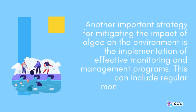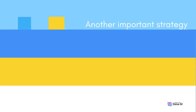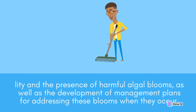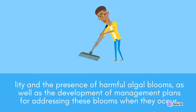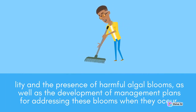Another important strategy for mitigating the impact of algae on the environment is the implementation of effective monitoring and management programs. This can include regular monitoring of water quality and the presence of harmful algal blooms, as well as the development of management plans for addressing these blooms when they occur.